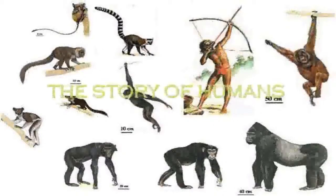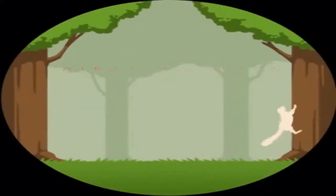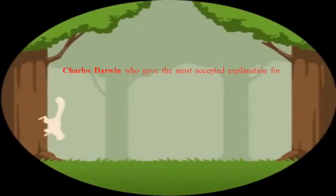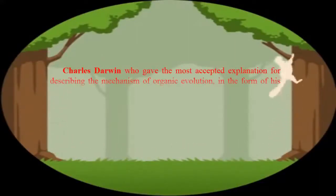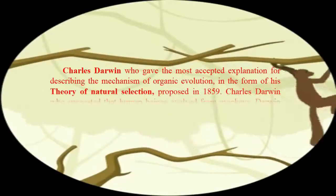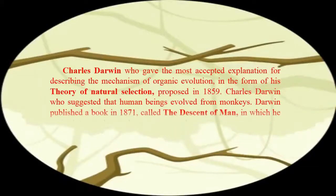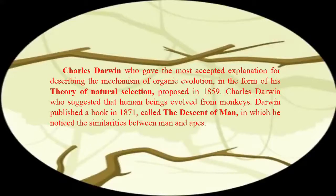The Story of Humans. Charles Darwin gave the most accepted explanation for the mechanism of organic evolution in the form of his theory of natural selection, proposed in 1859. Darwin suggested that human beings evolved from monkeys. He published a book in 1871 called The Descent of Man, in which he noticed the similarities between men and apes.